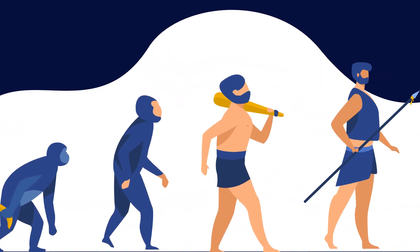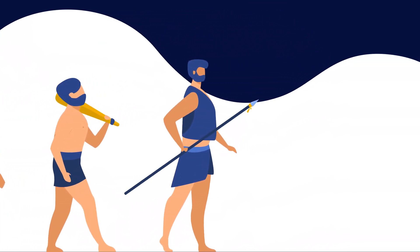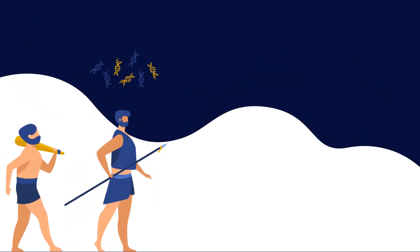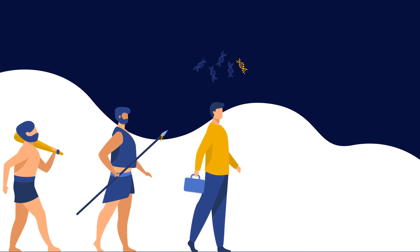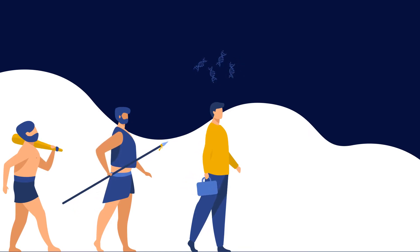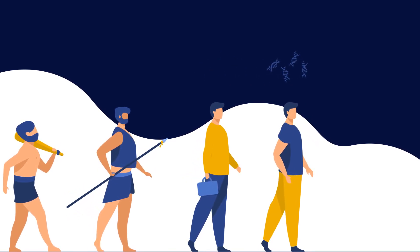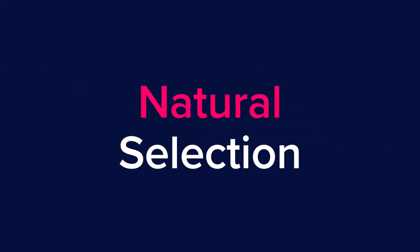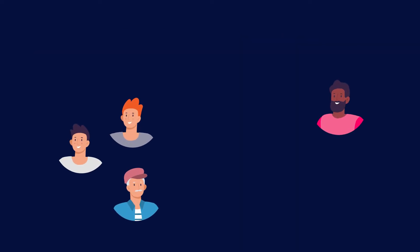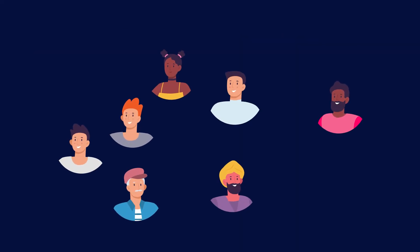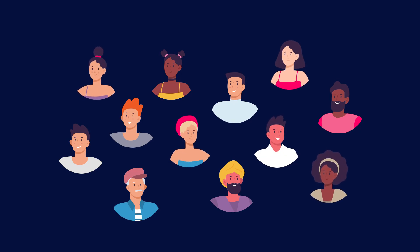What does all of this genetic variation do? Most genetic variation is relatively harmless, because of evolution. Genetic variants that are harmful are less likely to be passed down, while variants that don't hurt us or even help us are more likely to be passed on. This is called natural selection, and it is how evolution determines which genetic variants spread and which ones don't.